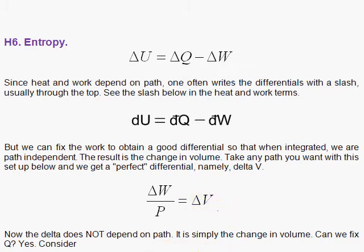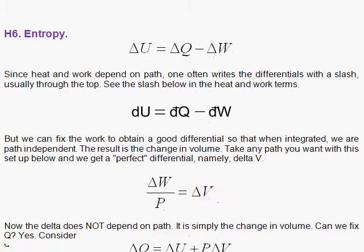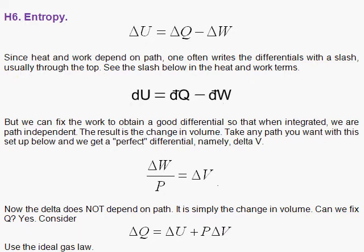Can we fix Q like that so that Q is a nice variable for the gas, rather than this heat that goes in or heat that comes out? Well, let's see what Q is. Since Q is delta U plus P delta V, since delta W is P delta V, Q would be then delta U plus the delta W, so you have the plus sign here.